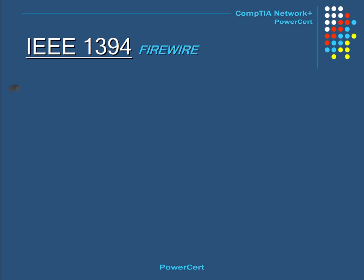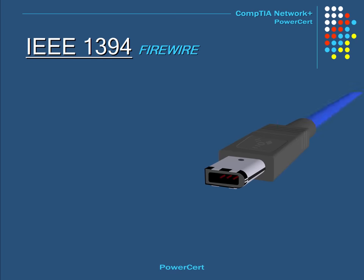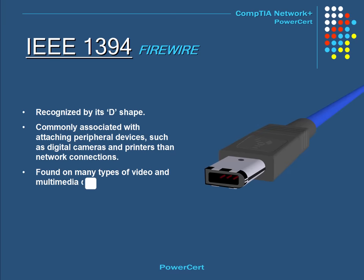This is the IEEE 1394 connector, also known as FireWire. FireWire is recognized by its D shape. This type of connection is becoming more popular on desktops and laptops and is commonly associated with attaching peripheral devices such as digital cameras and printers, rather than being used as network connections. These are also found on many types of video and multimedia devices.